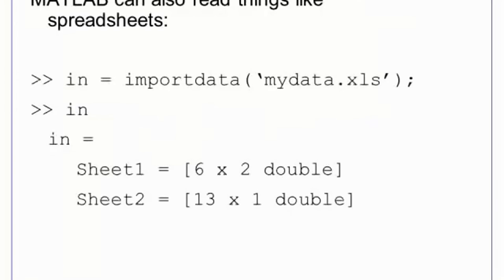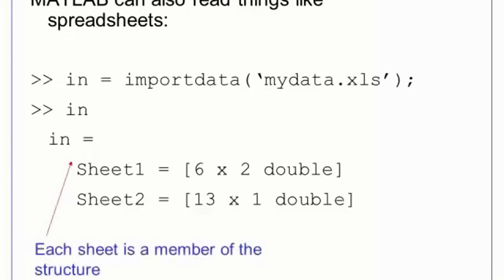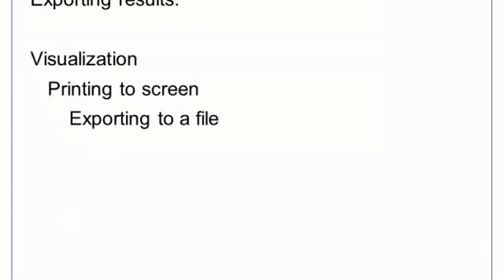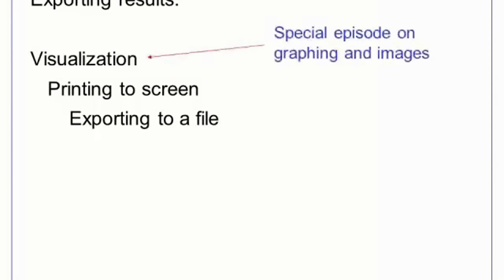The structure's format depends on the type of file that is imported. For instance, we can read a spreadsheet using the same importdata function. The result is a structure and each element of the structure is a sheet in the spreadsheet. The other half of file I/O is retrieving results from MATLAB. There are multiple ways to save data — we can save a plot or image of our data, we can save printed output such as a series of commands and their results, or we can export variables to a file. Visualization is a large topic that deserves its own episode.